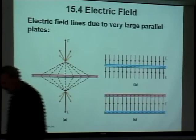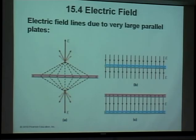Field lines never cross each other — so you never get positives crossing. If you've got two positive charges, the field lines will curve away from each other. They can never cross, which is why you get zero electric field between two like charges in some places.